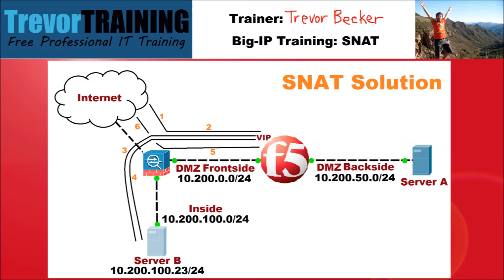4. Server B receives the request, analyzes and processes the application layer content, and forms a response. 5. The destination IP address is of the BIG-IP. Because the server does not have a route to the BIG-IP, it sends the request to its default gateway, which is the edge firewall. The edge firewall receives the response, analyzes the destination IP address field in the packet, sees that it's for the BIG-IP, and since it has a directly connected route to it, it forwards it to the BIG-IP.